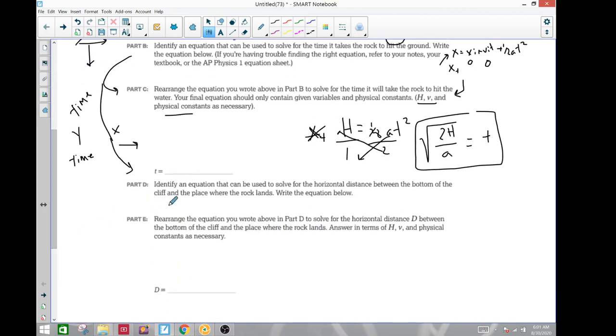Part D. Identify an equation that can be used to solve the horizontal distance between the bottom and the cliff and the place where the rocks land. Write the equation below. So again, we're finding a distance. Anytime you're solving for a distance, you've got to use the distance formula. So XT equals xi plus vit plus one half at squared. So they want us to solve it for D. D is just going to be XT in the horizontal position. Now notice that in the Y position, I still used x, which is fine. X is a location on a line, so whether it's vertical or horizontal. So I just need to solve for this guy here, location.